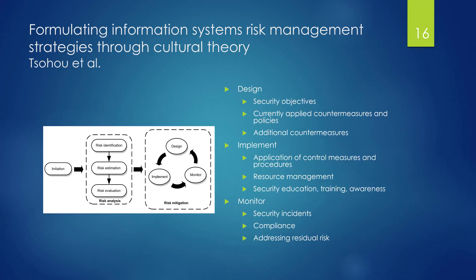Finally, we're going to have to design, implement, and monitor in the last stage of risk mitigation. We establish security mechanisms, look at current controls in place, and decide what additional ones to add in the design phase. In the implement phase, we apply those controls, manage resources of space, time, money, and people, then train and educate people on the new controls — whether they're technology controls, policy controls, or education, training, and awareness approaches.